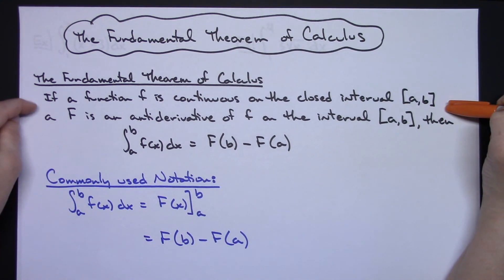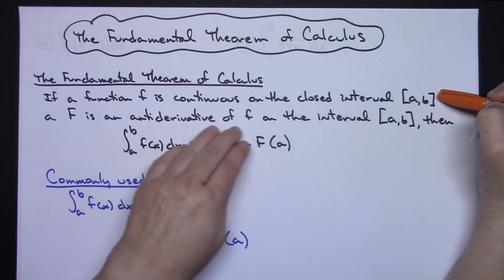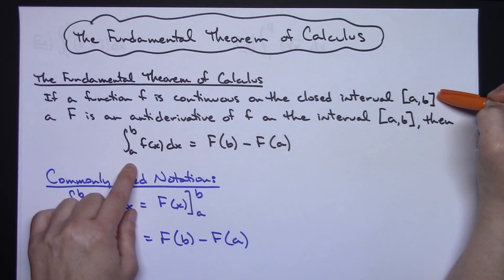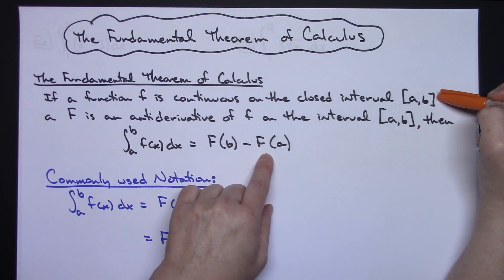Okay, so taking a look at the theorem here, basically it says if a function f is continuous on that closed interval from a to b, then capital F is the antiderivative of f on the interval from a to b, so then we can say that the integral from a to b of f(x)dx is equal to capital F(b) minus capital F(a).